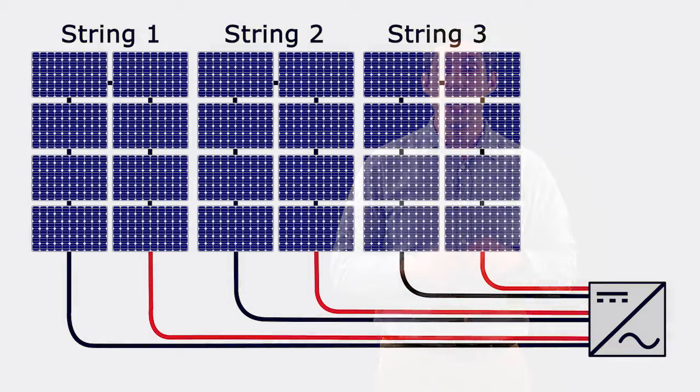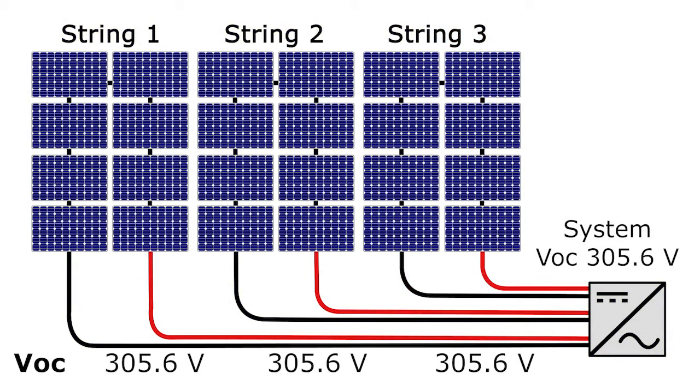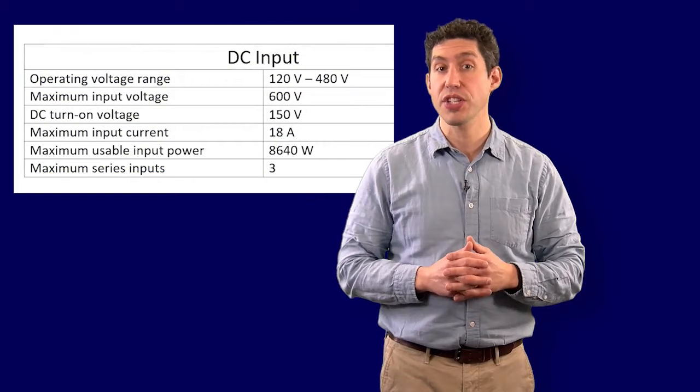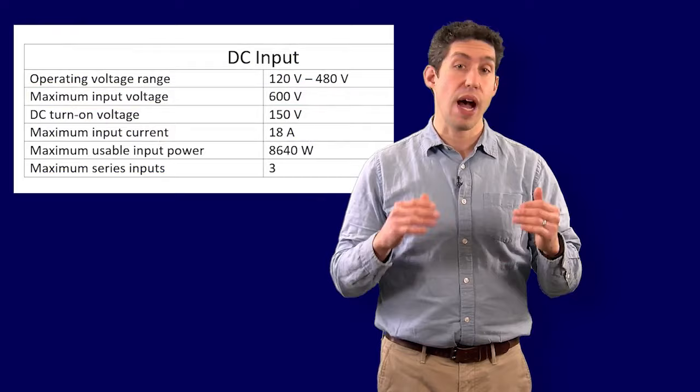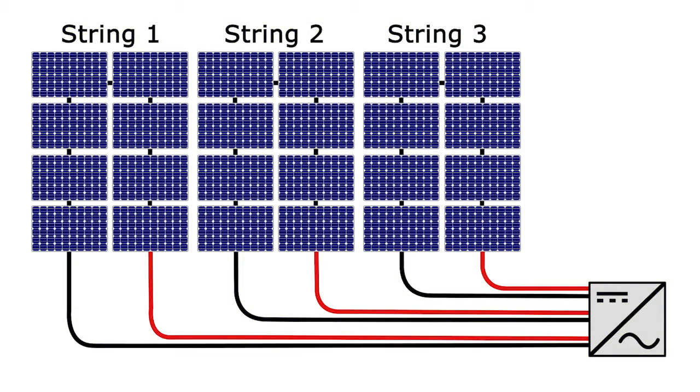So let's see what happens when we try three strings of 8. In this case, each string would have an open circuit voltage of 305.6 volts and 208 volts at maximum power. This fits within the specifications of the inverter, which requires less than 600 volts at VOC and that the operating range be less than 480 volts.